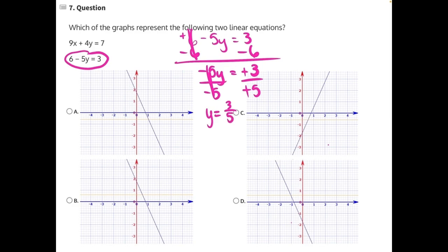So now we need to look at all of our answer choices and find a horizontal line that has no slope that is passing through the point y equals 3 fifths.